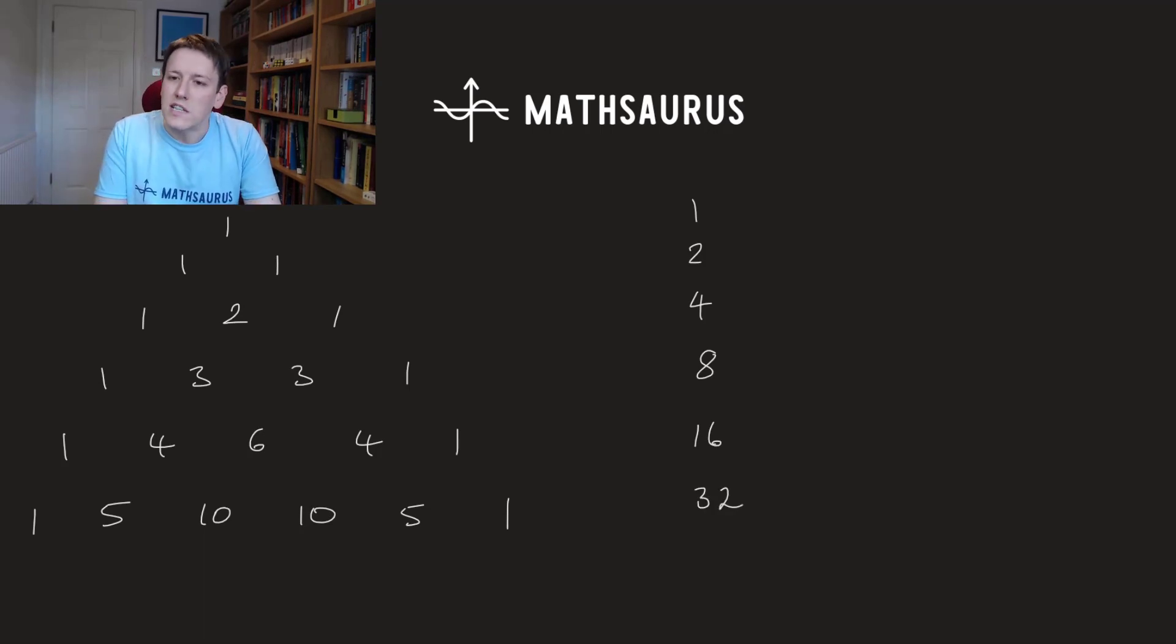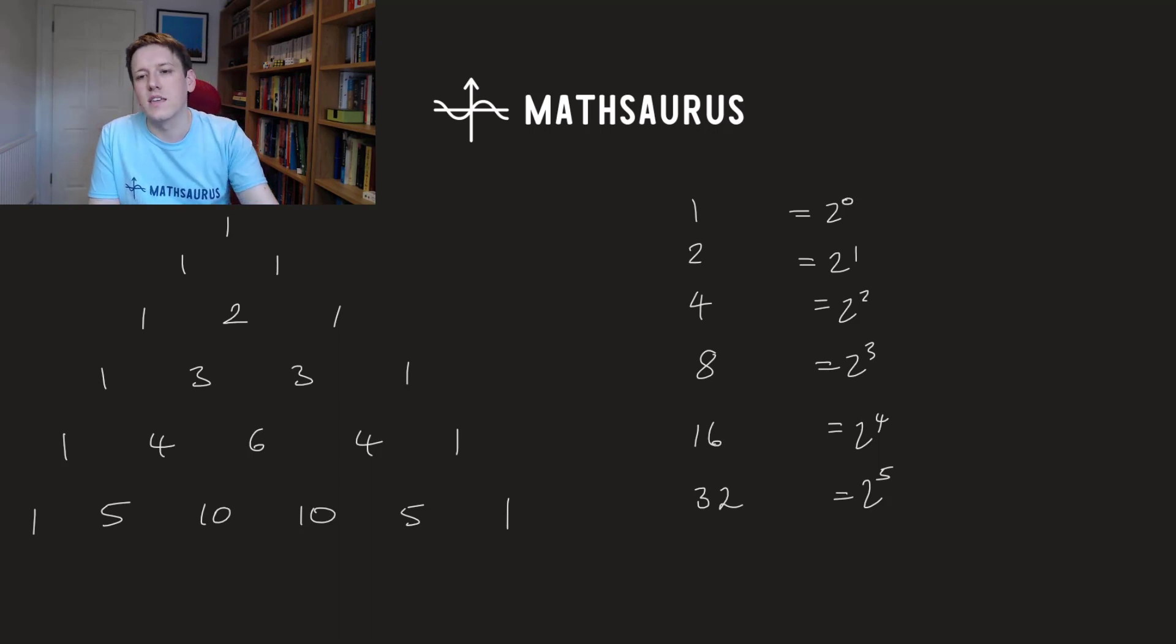Now, looks like the sum of the rows are just powers of 2: 2 to the 0, 2 to the 1, 2 squared, 2 cubed, 2 to the 4, 2 to the 5, and the values just keep doubling. Now, it's important in Maths not to just assume that this pattern goes on forever. There are some famous examples of sequences that start a bit like this that turn out not to continue in that way.